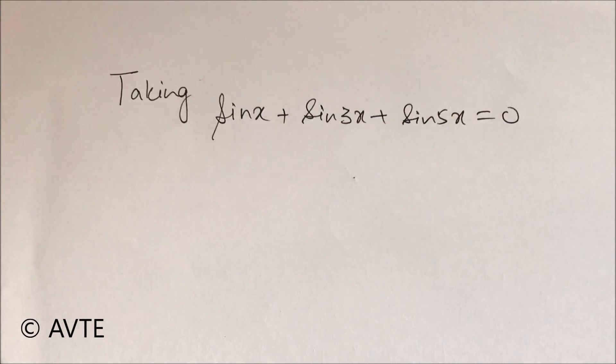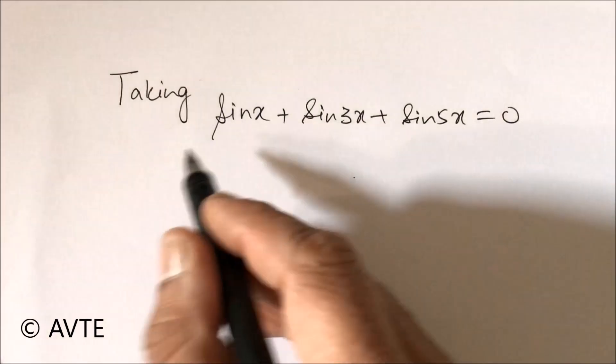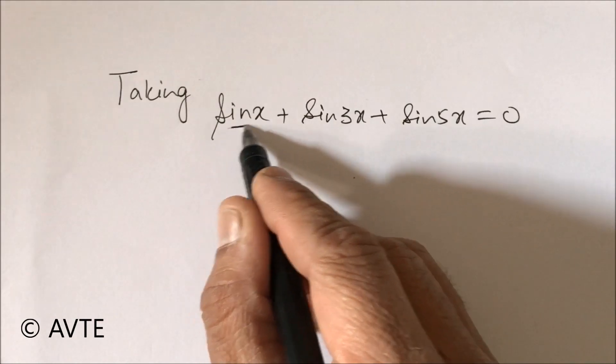Taking sin x plus sin 3x plus sin 5x is equal to 0. So the next important move will be how to group.